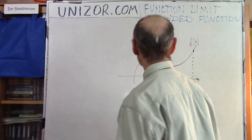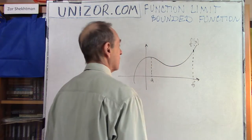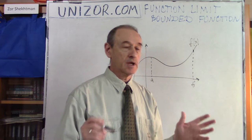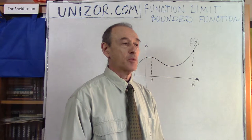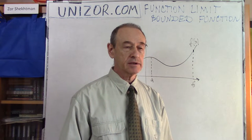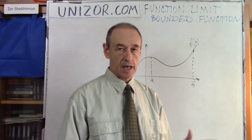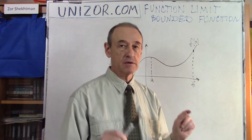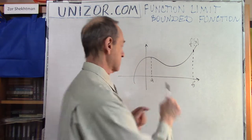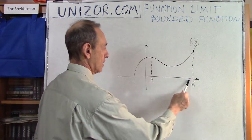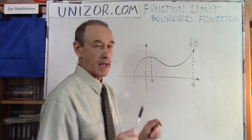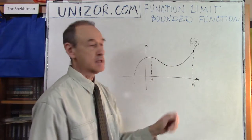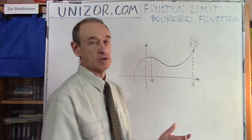So back to boundedness. We're talking about continuous functions which are defined on a segment, which is a contiguous interval including both ends — so this is from a to b, including both ends — and the function is continuous.